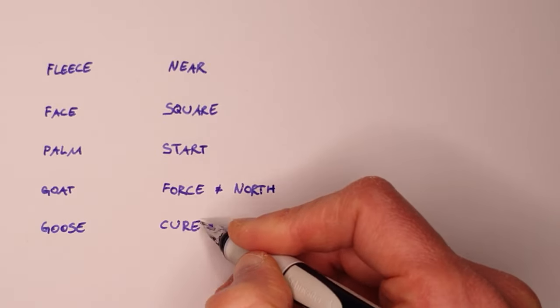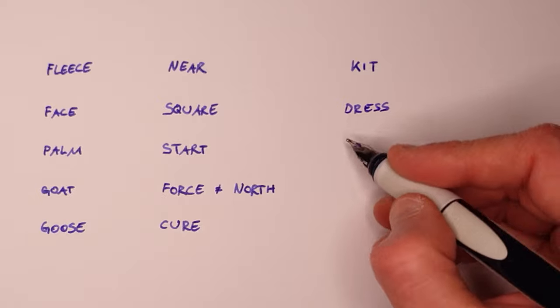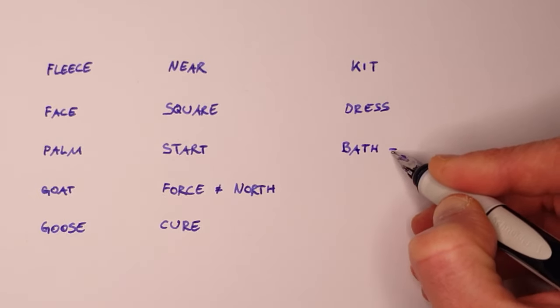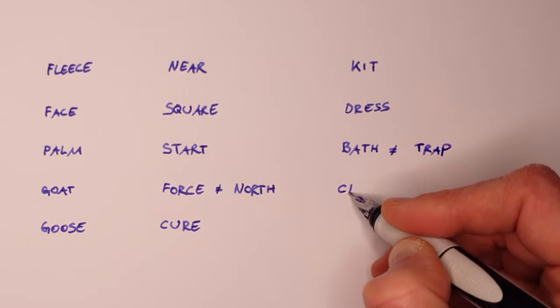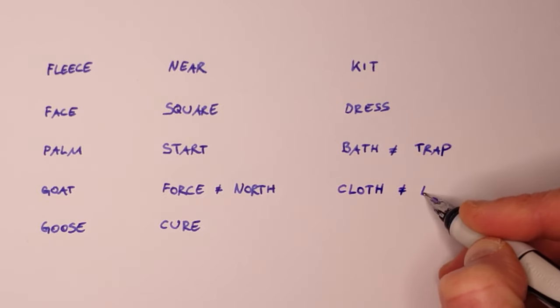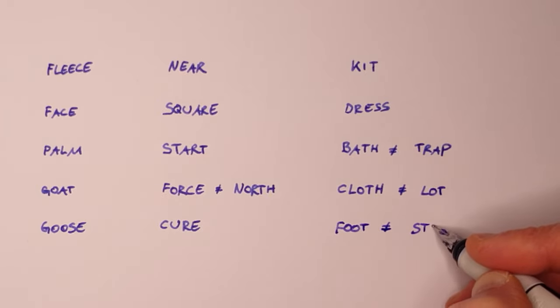So to get a more consistent pronunciation, I looked at lexical sets, classes of words with the same vowel phoneme, such as cure. I started out with the British English vowel system, also called received pronunciation, or RP for short.